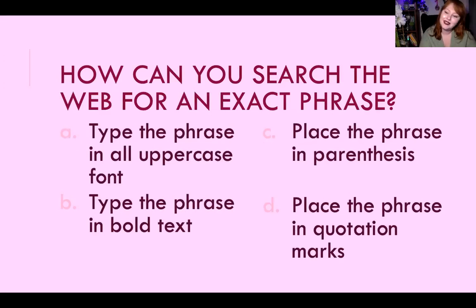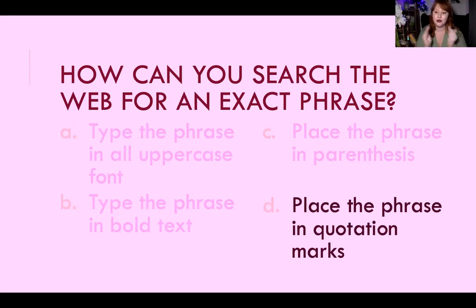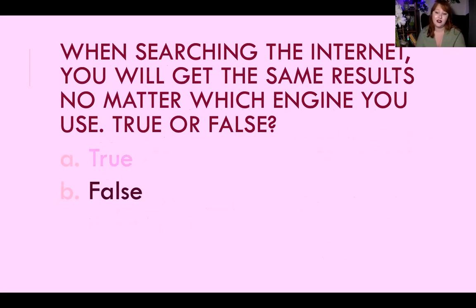How can you search the web for an exact phrase? You put quotation marks around the phrase so it's read as one search unit, rather than all those individual words being found separately. You want those words found together on the site, so put them in quotation marks. When searching the internet, will you get the same results no matter what engine you use? No. Every engine gives you different results because they have different databases and different algorithms. Due to your cookies, you'll also get personalized results based on previous searches.